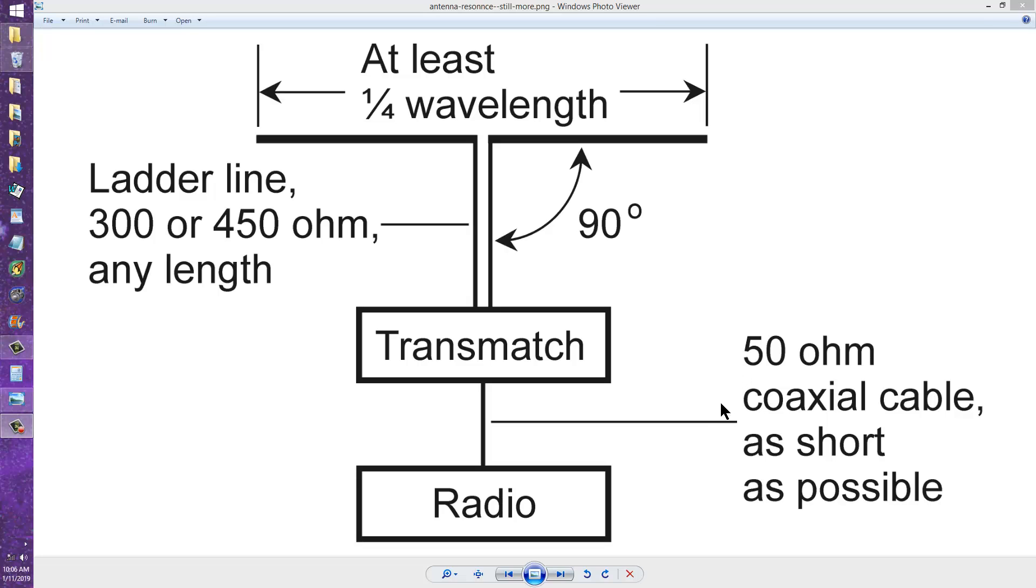Again, the 50 ohm coaxial cable between the transmatch and the radio should be as short as possible.